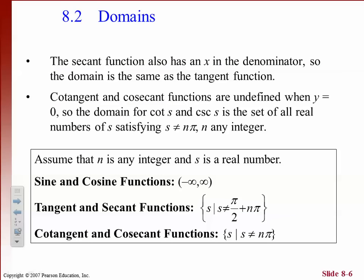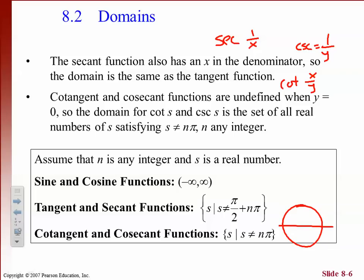Secant also has x in the denominator, so it's undefined at those same places — secant is 1 over x. Cotangent is the reciprocal of tangent, so instead of y over x it's x over y. When y is 0, cotangent is undefined. Cosecant equals 1 over y, so that's also undefined when y is 0 — which occurs at 0 and pi on the unit circle.